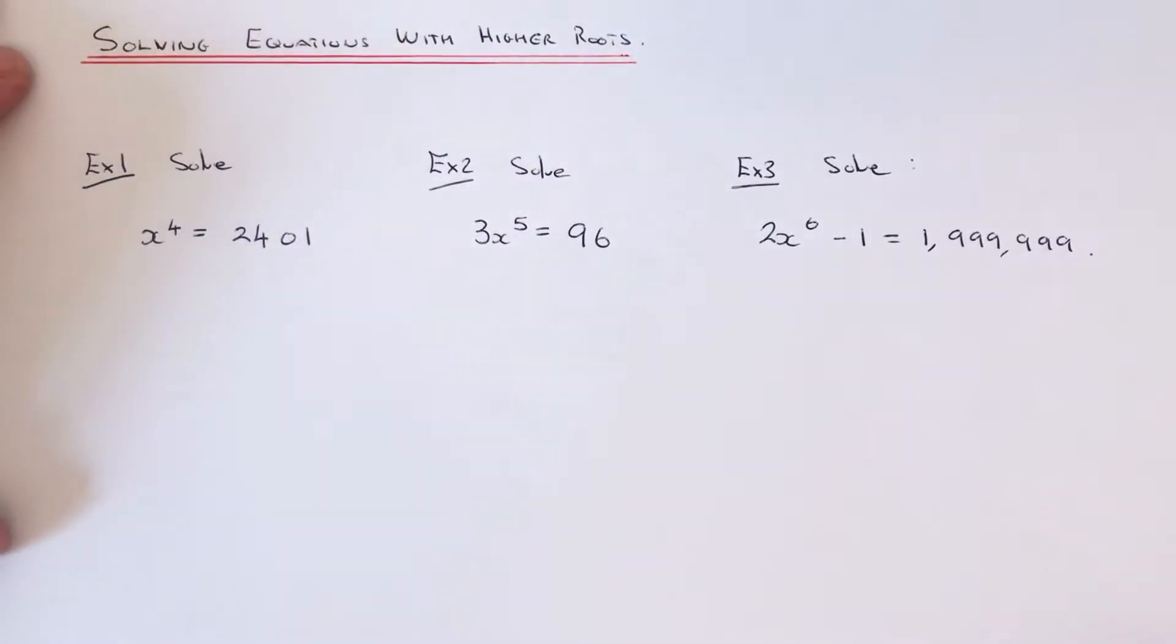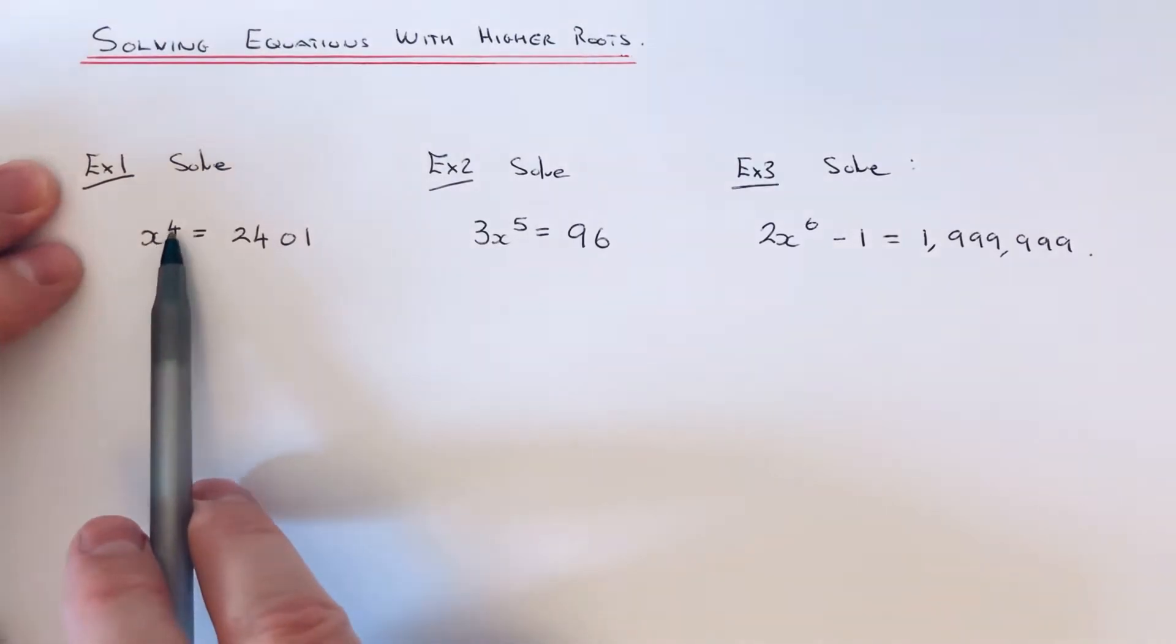Hi guys, welcome back. Today I'm going to show you how to solve some equations with higher roots. Let's have a look at the first example. We're going to solve x to the power 4 equals 2,401.